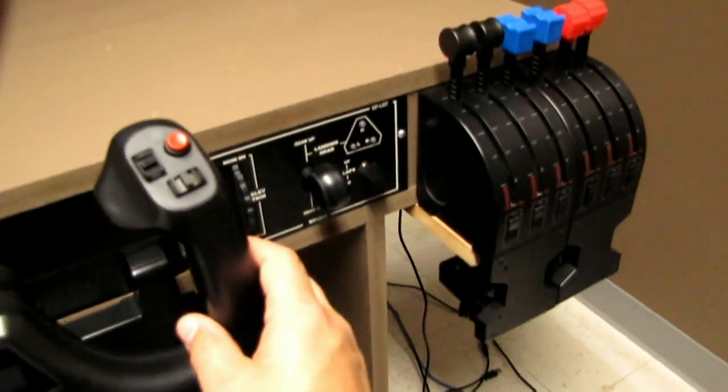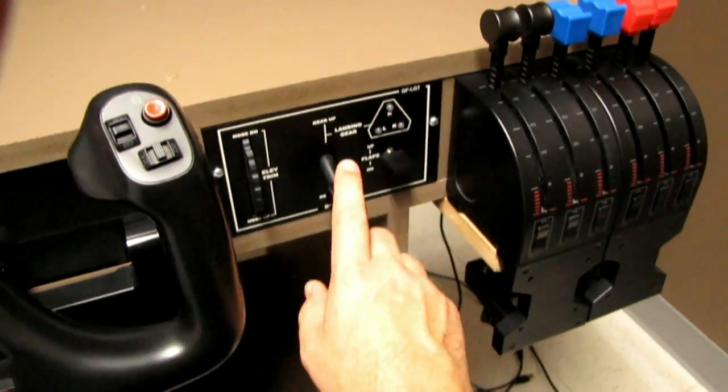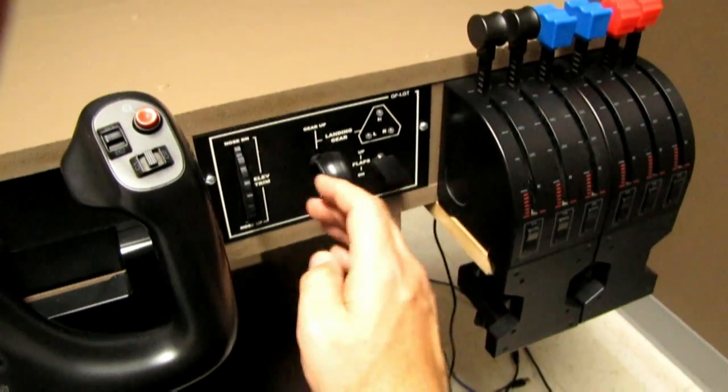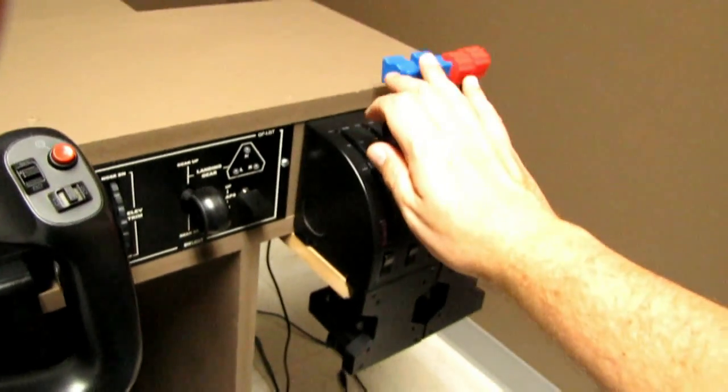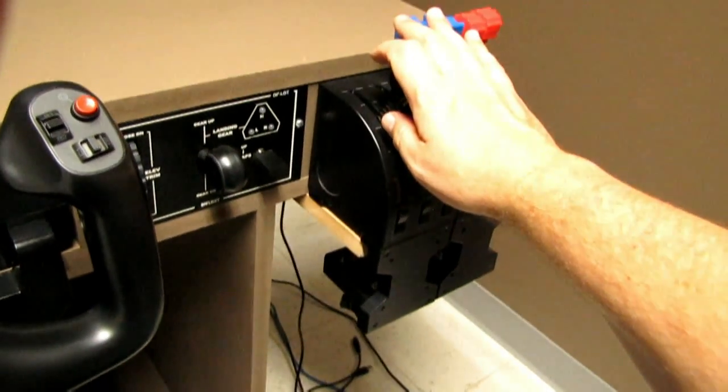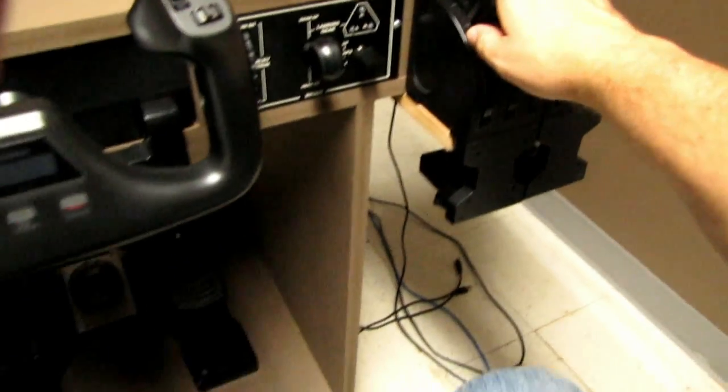And just to the immediate right over here, you got your landing gear, trim lever, landing gear, got your flap switch, elevator trim. And mounted nicely to the right of them is the throttle unit.